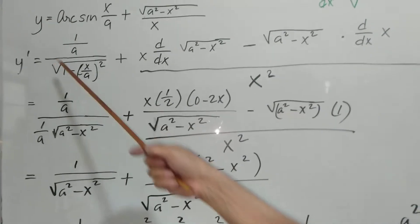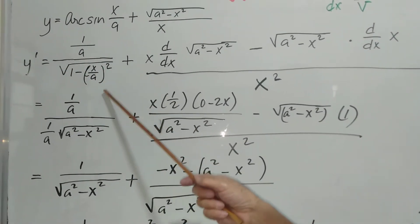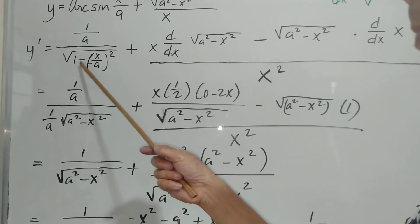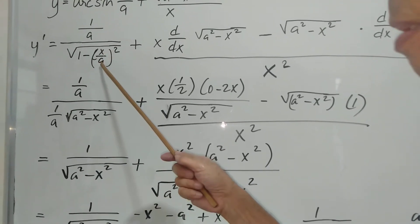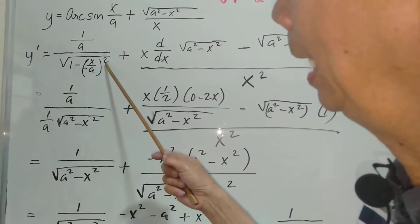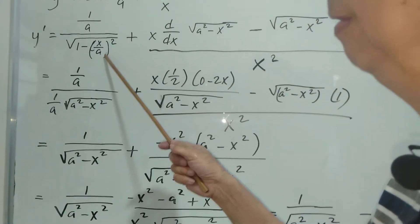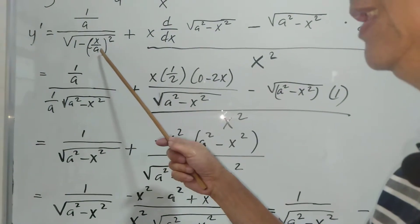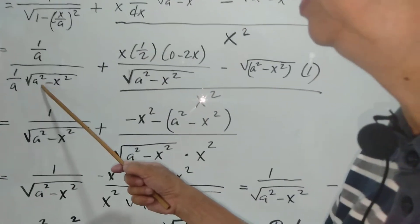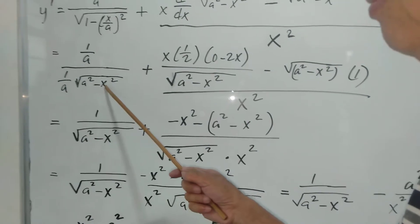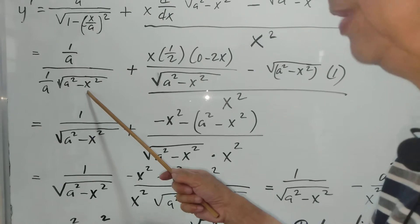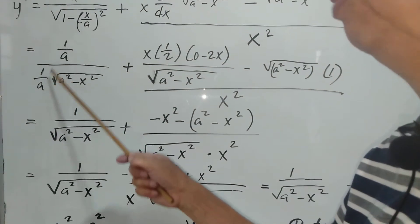Now we're going to simplify. We get the LCD of 1 minus (x/a) squared. The LCD is a squared, so this becomes (a squared minus x squared) over a squared under the radical, and we can take the square root of the denominator a squared, which gives 1 over a. So this is the simplified derivative of the first term.